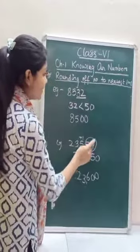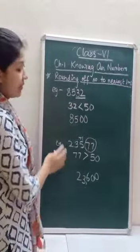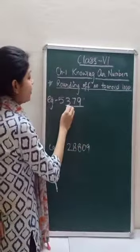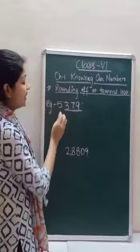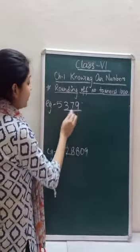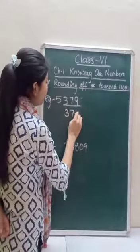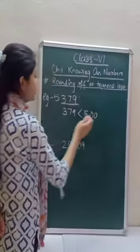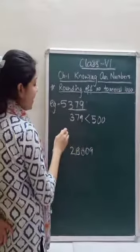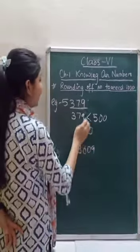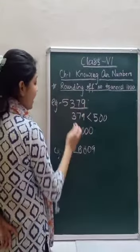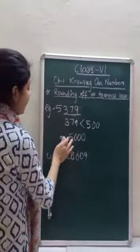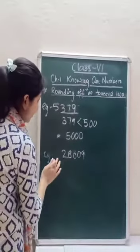For rounding off to the nearest thousand, you have to see the last three digits of the number. If the last three digits form a number smaller than 500, you put zeros in the place of ones, tens, and hundreds, and the rest of the number remains the same.